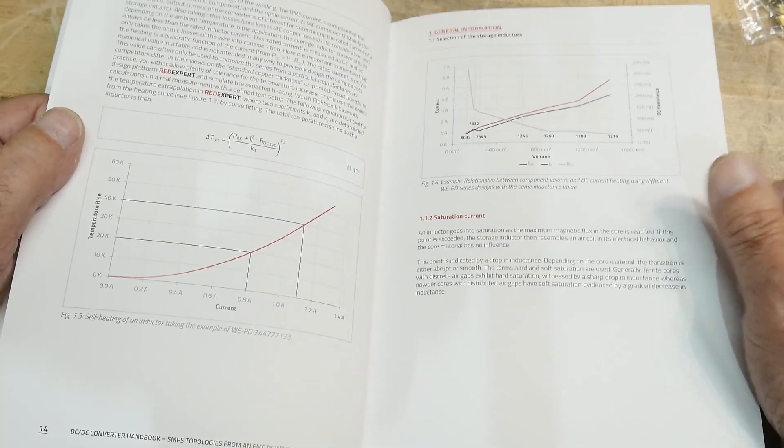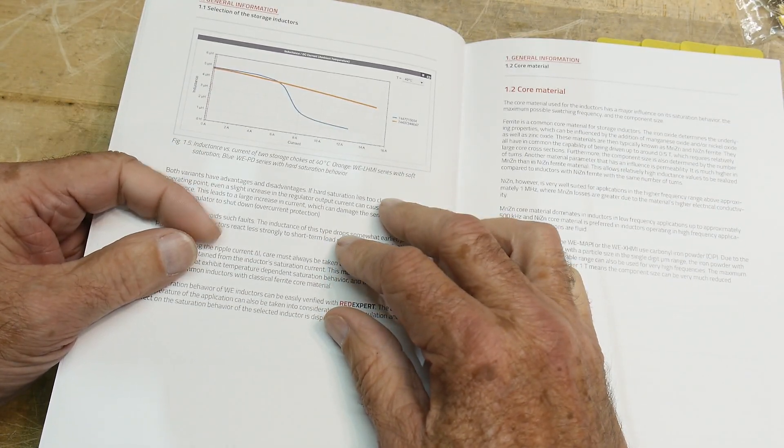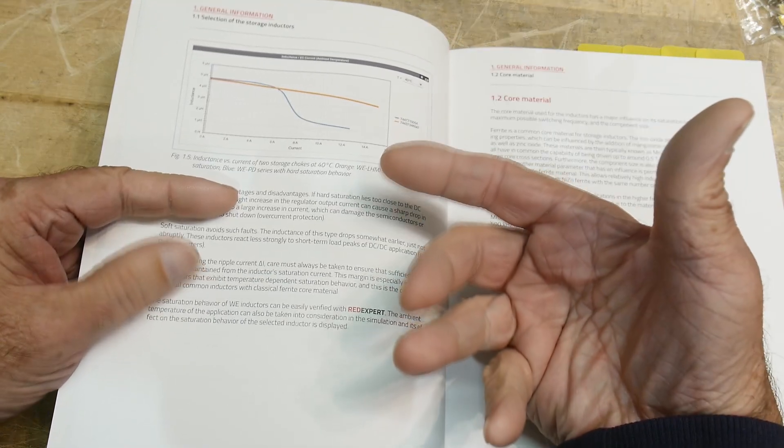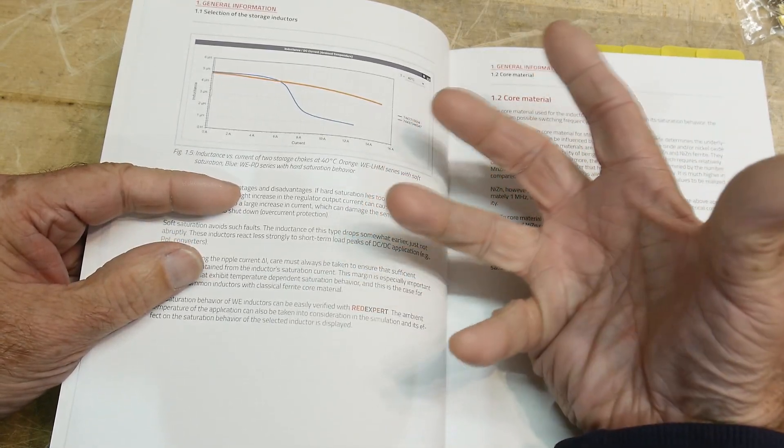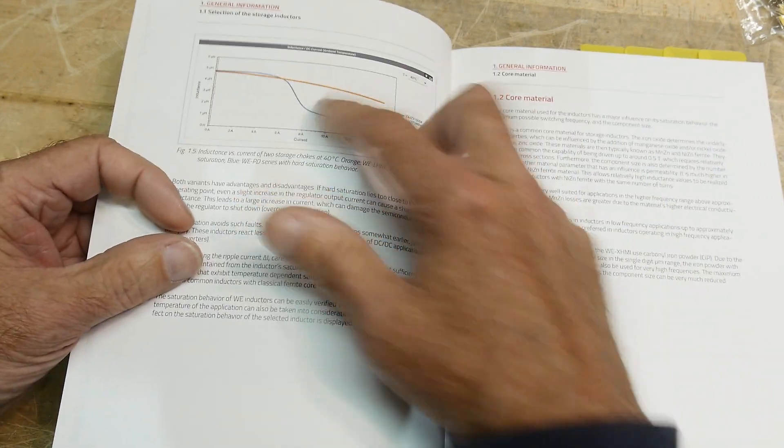There's a lot of interesting graphs. I think it's a great introduction to the subject. Core saturation, if you have too much magnetic fields in the core, it stops working. And so they talk about that.